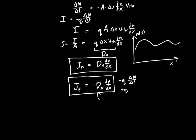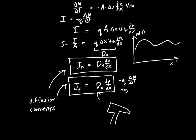D_p and D_n are slightly different from each other, and they're related to the mobilities through what's called the Einstein relation, which may be covered in a future video. These are the diffusion currents for both electrons and holes. Now that we have both diffusion currents and drift currents, we're almost ready to develop our continuity equations — the sledgehammer we'll use to analyze all the devices we might want to study. That's what the next video will cover.